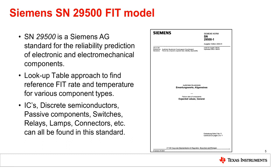Siemens SN29500 is a Siemens AG standard for the reliability prediction of electronic and electromechanical components. It's a lookup table approach to find reference fit rate and temperature for various component types. ICs, discrete semiconductors, passive components, switches, relays, lamps, connectors, etc. can all be found in this standard.